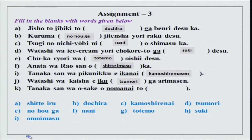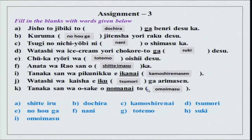Watashi wa kaisha e iku tsumori ga arimasen. Tsumori means I intend to — it is my intention, not someone else's. Iku tsumori ga arimasen means I do not plan or intend to go. Before tsumori the verb is in plain form. Then: Tanaka san wa osake wo nomanai to omoimasu. Omoimasu means to think. Nomanai to omoimasu means I think I will not drink. Again, before omoimasu the verb is in plain form.